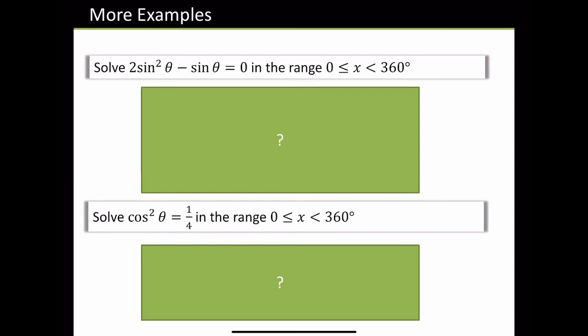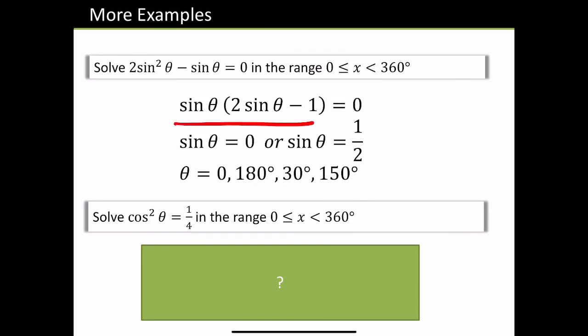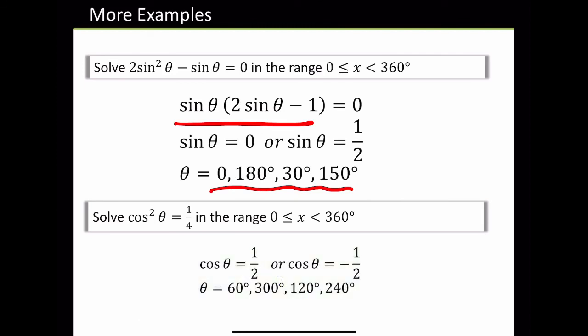Pause the video and try these questions. You should solve 2 sin²θ — again, factorise into two brackets, and you've got your four solutions. For this one it says solve cos²θ equals 1/4. You want just cos θ, so square root both sides — but what's really important: the plus minus. So it could be plus 1/2 or minus 1/2, because square root of 1/4 is plus or minus 1/2. Therefore you get four solutions.